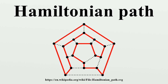Dirac's theorem: A simple graph with n vertices is Hamiltonian if every vertex has degree n/2 or greater. Ore's theorem: A graph with n vertices is Hamiltonian if, for every pair of non-adjacent vertices, the sum of their degrees is n or greater.